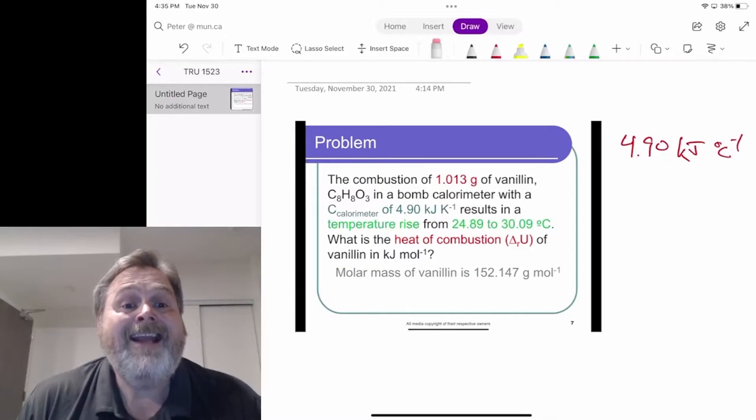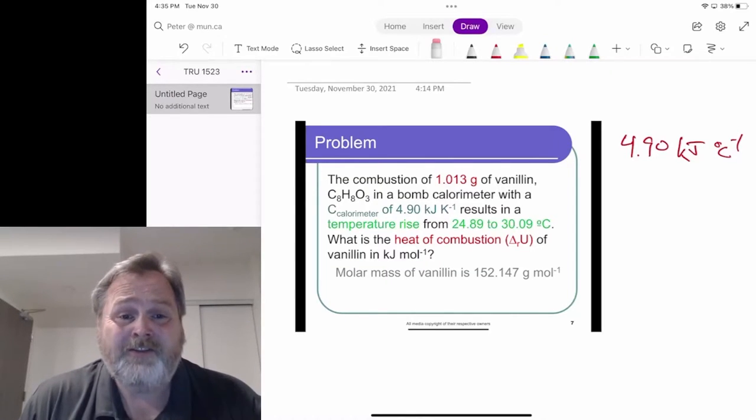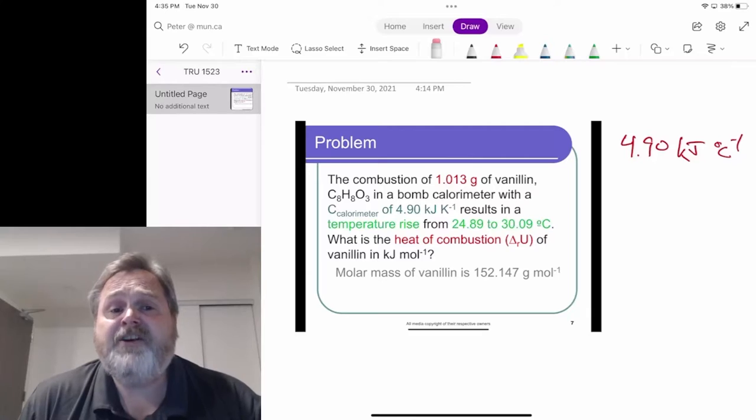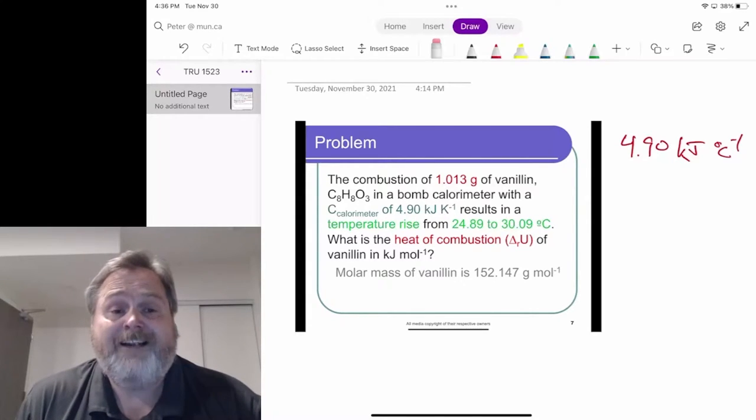So that's going to help us in our intuition because that means our internal energy change, our heat of combustion, should end up being a negative number. And it shouldn't surprise us if it's in the range of hundreds to thousands of kilojoules per mole because that's pretty typical for combustion reactions. We actually get a lot of energy out by burning stuff.